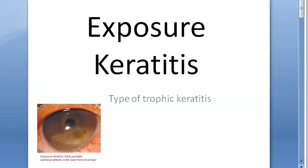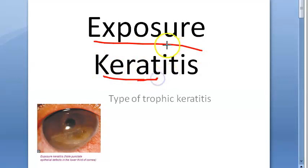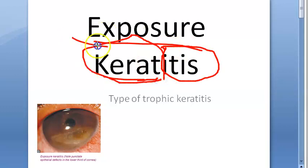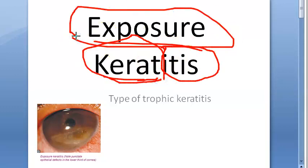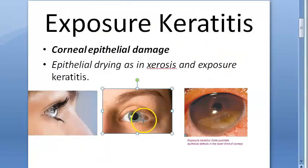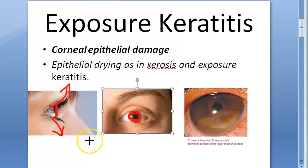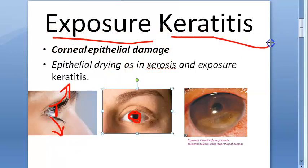In this video we want to look at exposure keratitis. 'Itis' is inflammation, 'kerat' refers to cornea. Exposure means the cornea is exposed and hence it is inflamed. The outermost layer of the eye is the cornea. When there is excessive exposure, the cornea will get exposed, dry, and then it will lead to exposure keratitis.